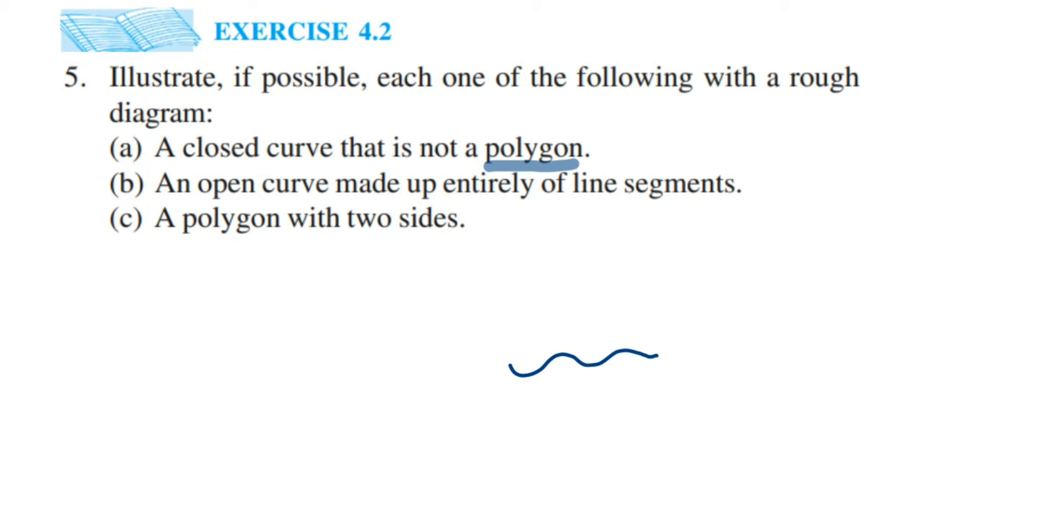So you can take an example of a circle because circle is, you can see, a closed curve. Its starting point and end point are the same and you can also see that it is a curve, it's a closed curve. Suppose I'm starting from here, this is my starting point and I can just go across like this and my end point will also be the same. So it is a closed figure and it's not a polygon because it doesn't contain any line segments.